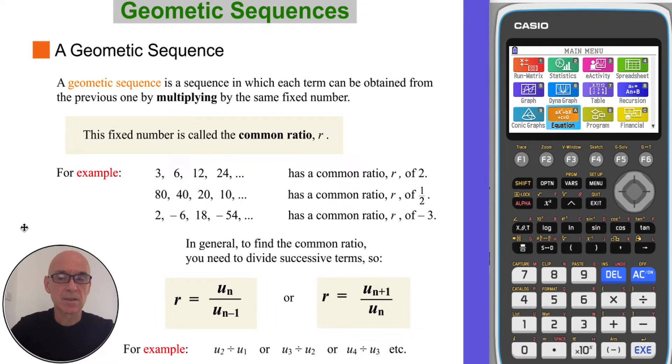A geometric sequence is a sequence in which each term can be obtained from the previous term by multiplying by the same fixed number. That same fixed number is called the common ratio and is given the symbol R.